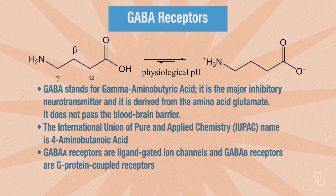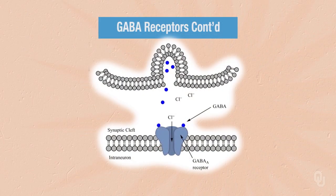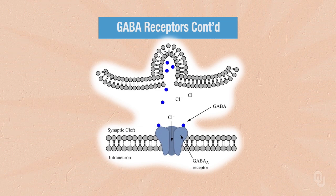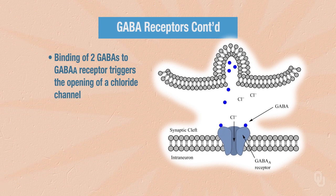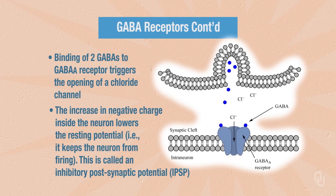What you should know about GABA receptors is that we have two classes. GABA-A receptors are ligand-gated ion channels, and GABA-B receptors are G-protein coupled receptors. We're going to focus our attention on the GABA-A receptor. Looking at our diagram, this represents the fusion of a vesicle containing the neurotransmitter GABA and the release of GABA into the synaptic cleft. We need two GABAs to bind to the GABA-A receptor, which triggers the opening of this receptor, allowing the passage of chloride ions inside the next neuron. The increase in negative charge inside the next neuron lowers the resting potential and keeps the neuron from firing — this is called an inhibitory post-synaptic potential.